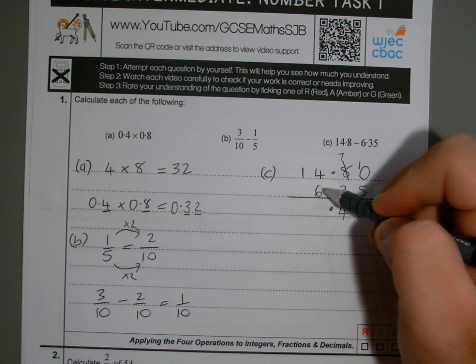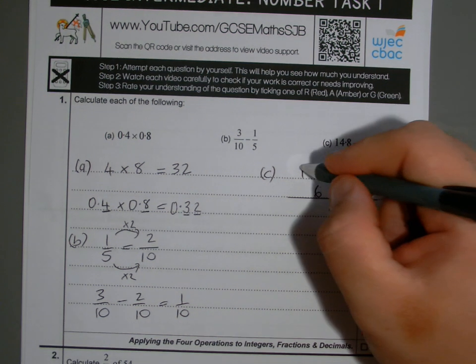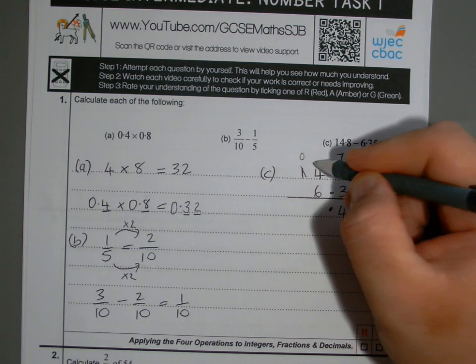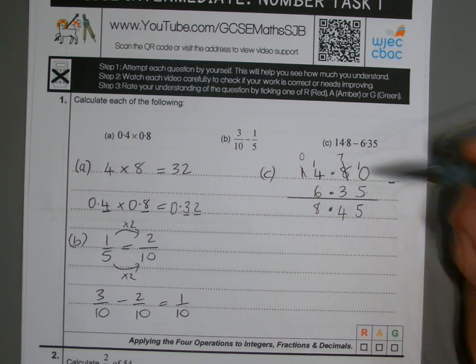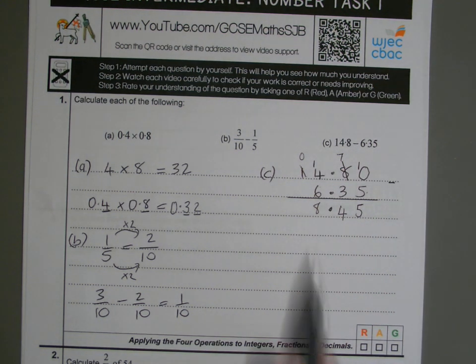4 take away 6, I can't do. So I borrow that 1, which means I've got nothing there now. And the 1 I borrow, I put here, so that becomes 14 take away 6, which is 8. And I've got nothing here then in our 10s column, so my answer is 8.45.